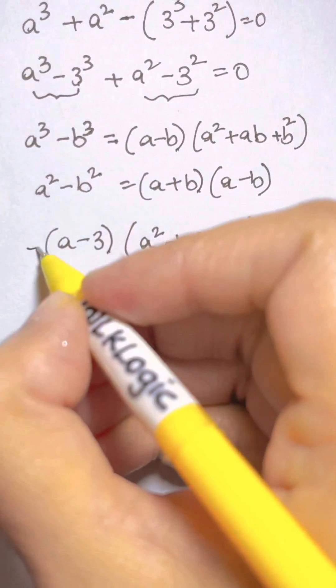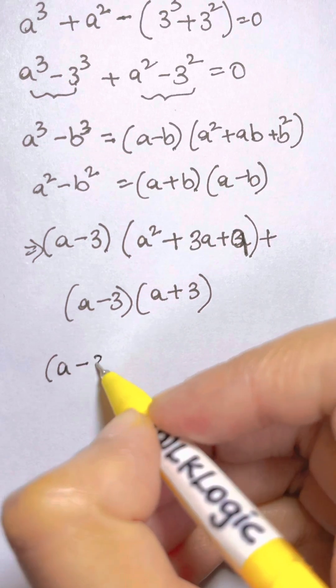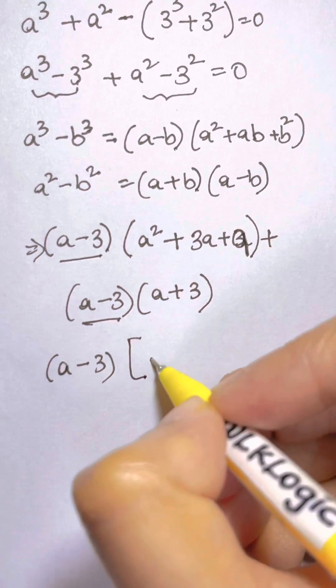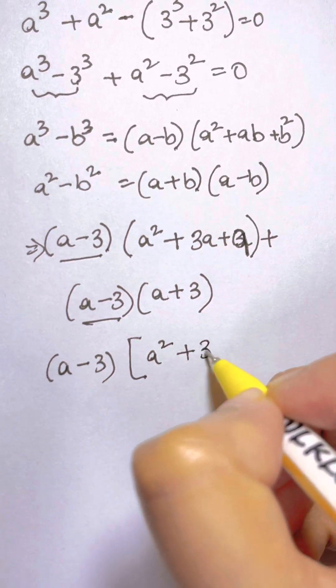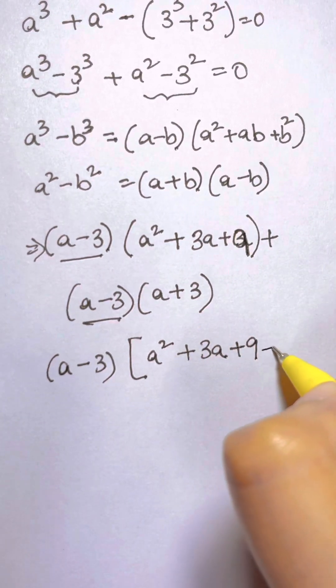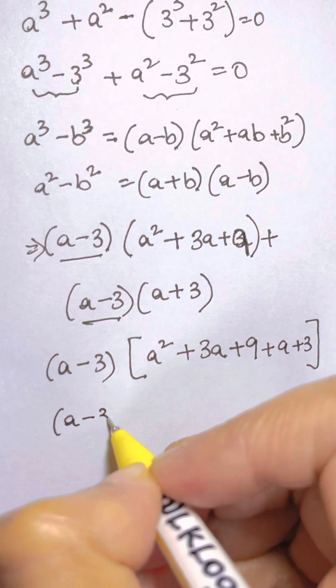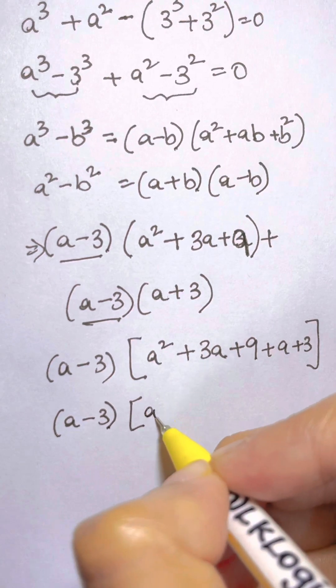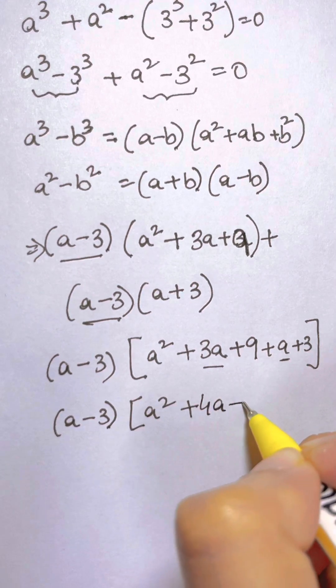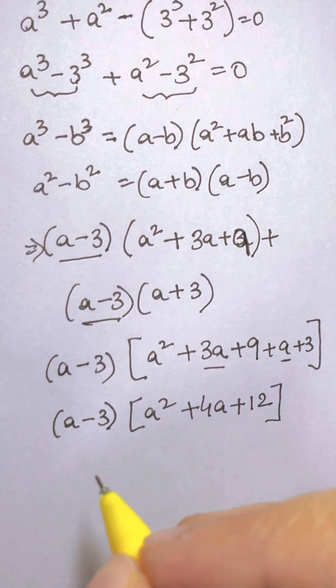Now we are going to solve it further. Let's open up the brackets. We have a - 3 as a factor here and here. I am going to take that out, common. So I am left with a² + 3a + 9 and I have plus a + 3. So I have (a - 3)(a² + 4a + 12).